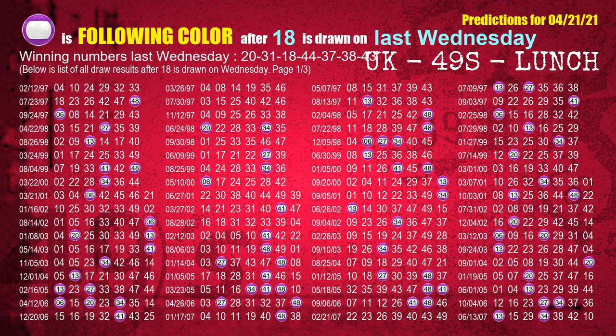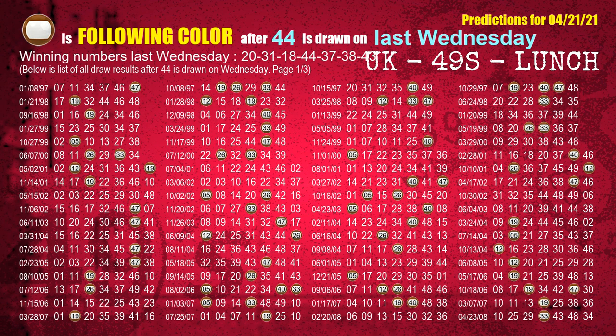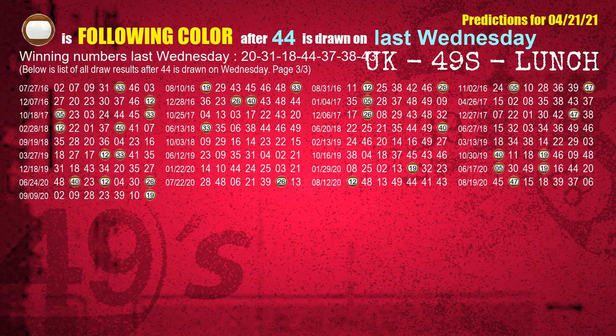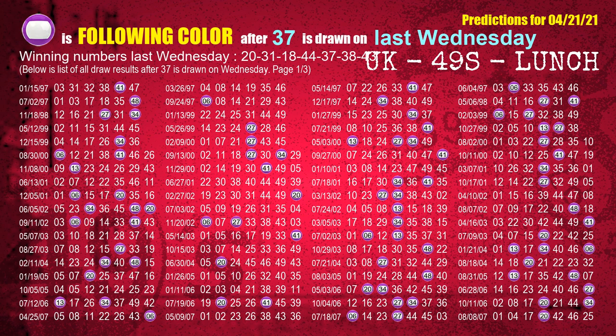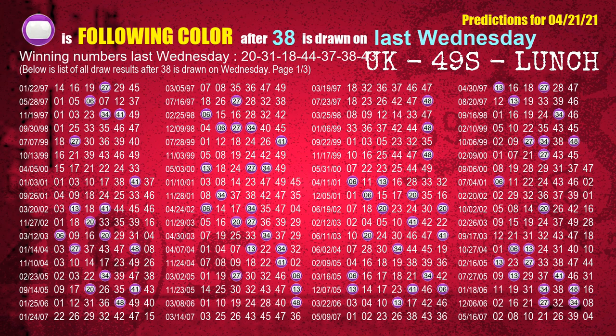The third winning number last Wednesday is 18. The most frequently following color is purple when 18 is the winning number on last Wednesday. The fourth winning number last Wednesday is 44. The most frequently following color is brown when 44 is the winning number on last Wednesday. The fifth winning number last Wednesday is 37. The most frequently following color is purple when 37 is the winning number on last Wednesday. The sixth winning number last Wednesday is 38. The most frequently following color is purple when 38 is the winning number on last Wednesday.